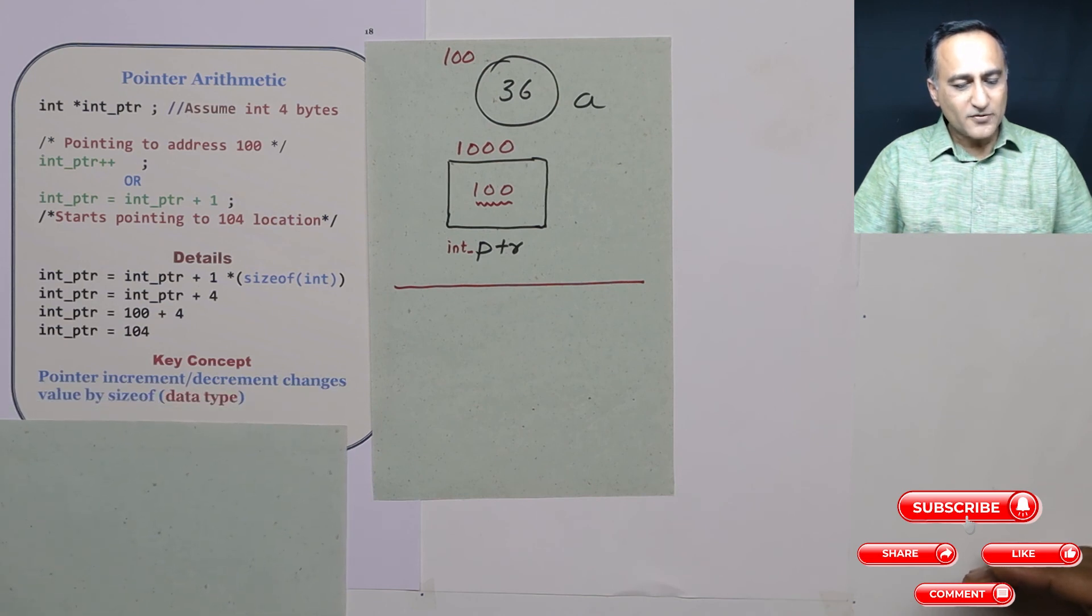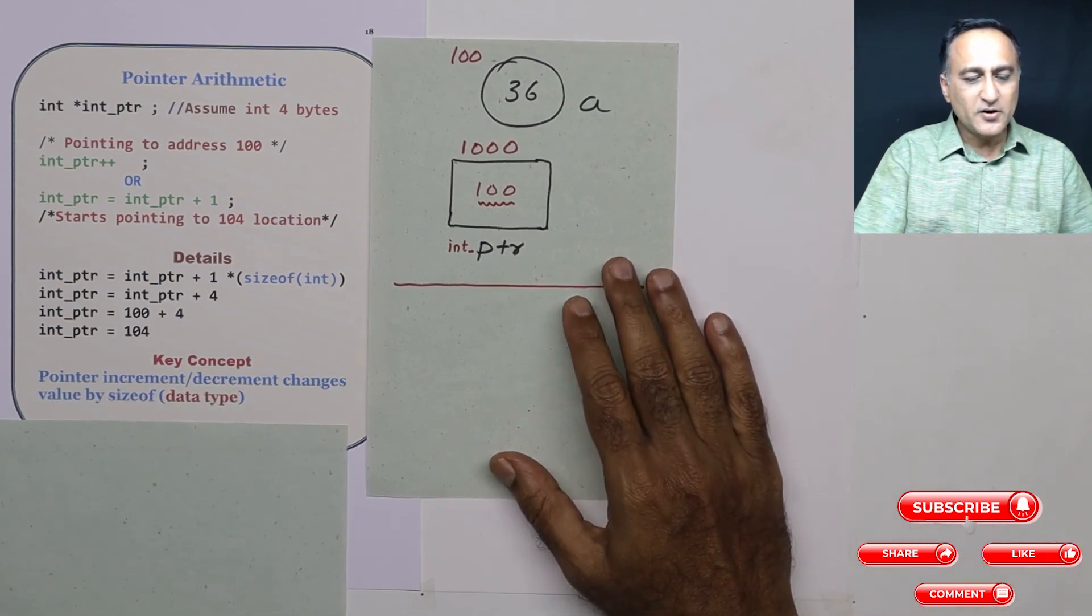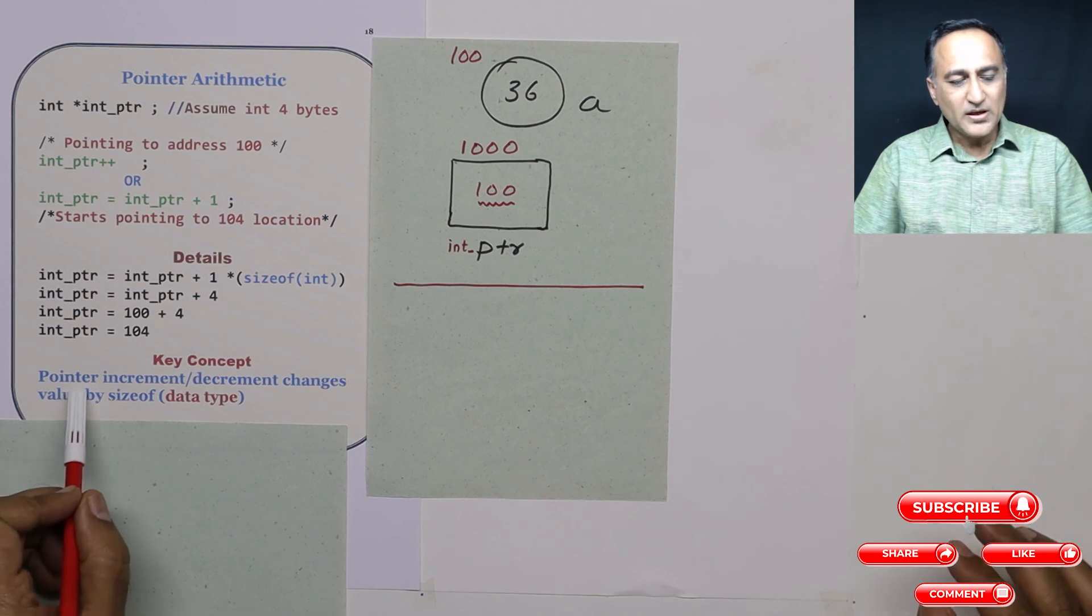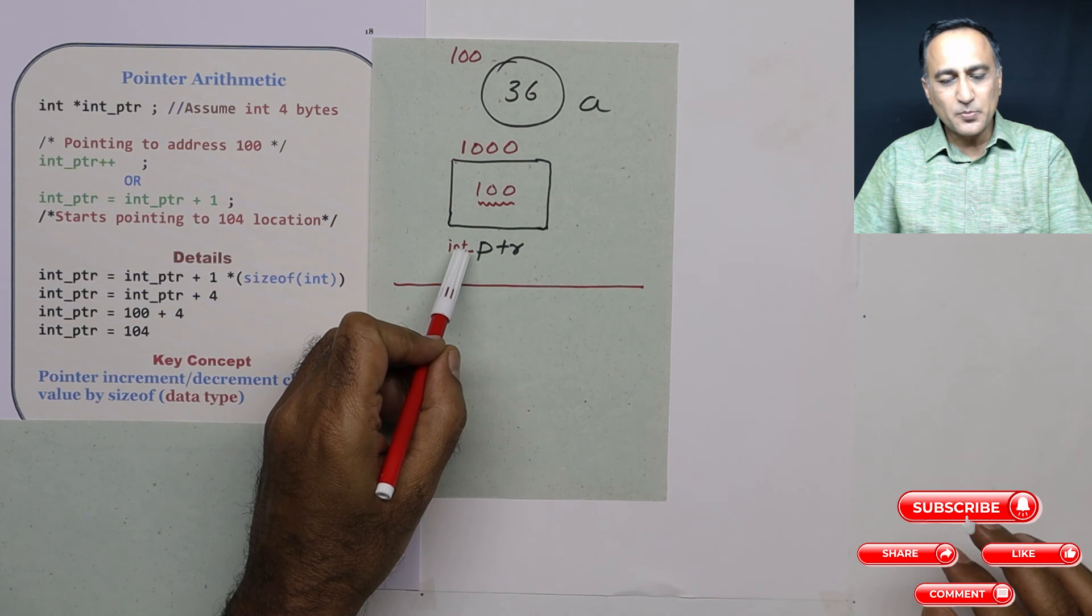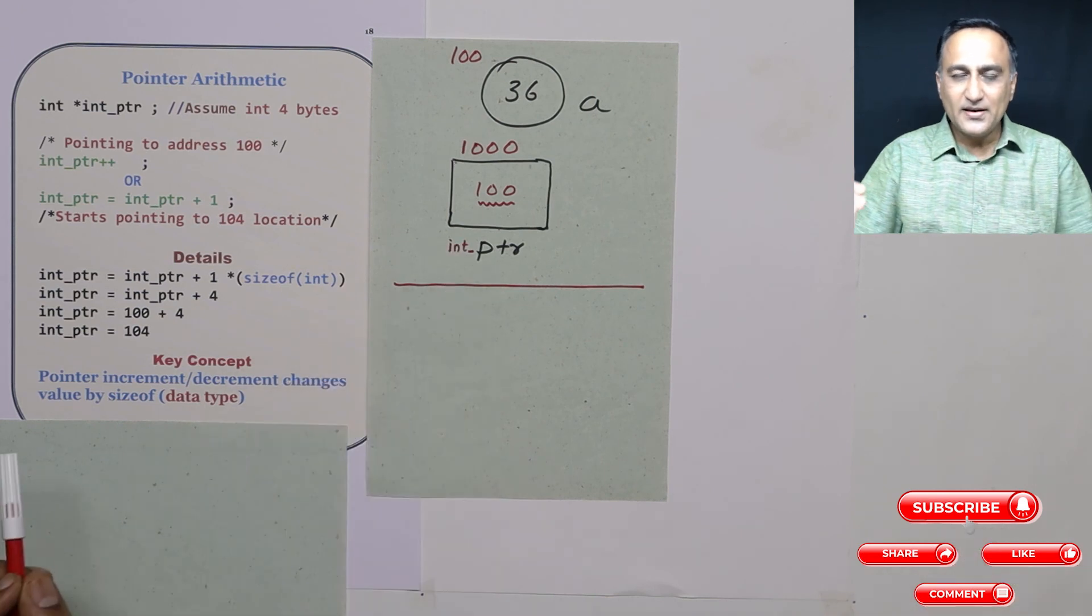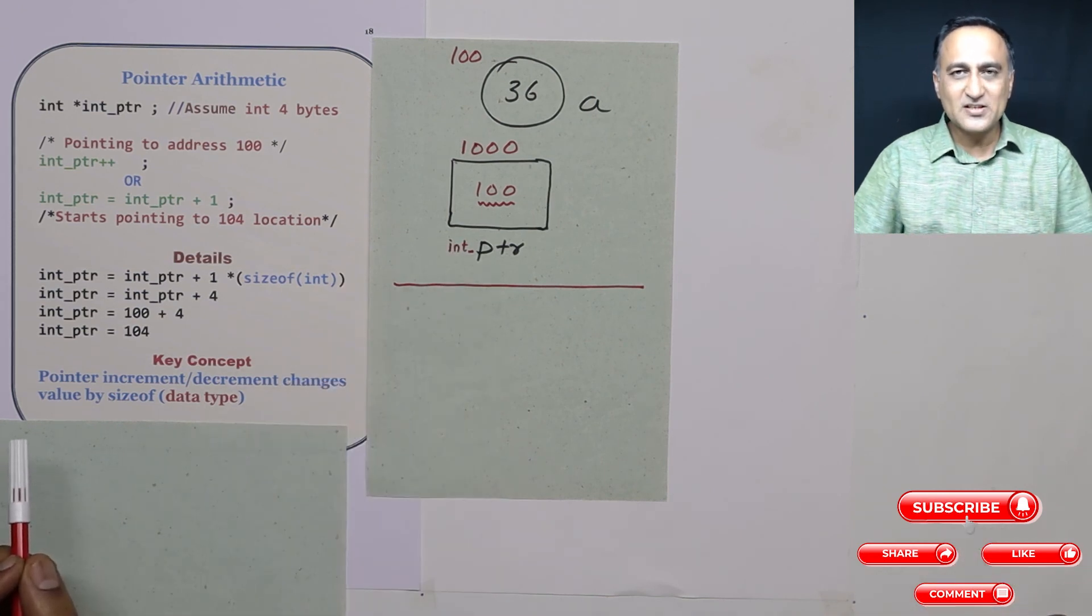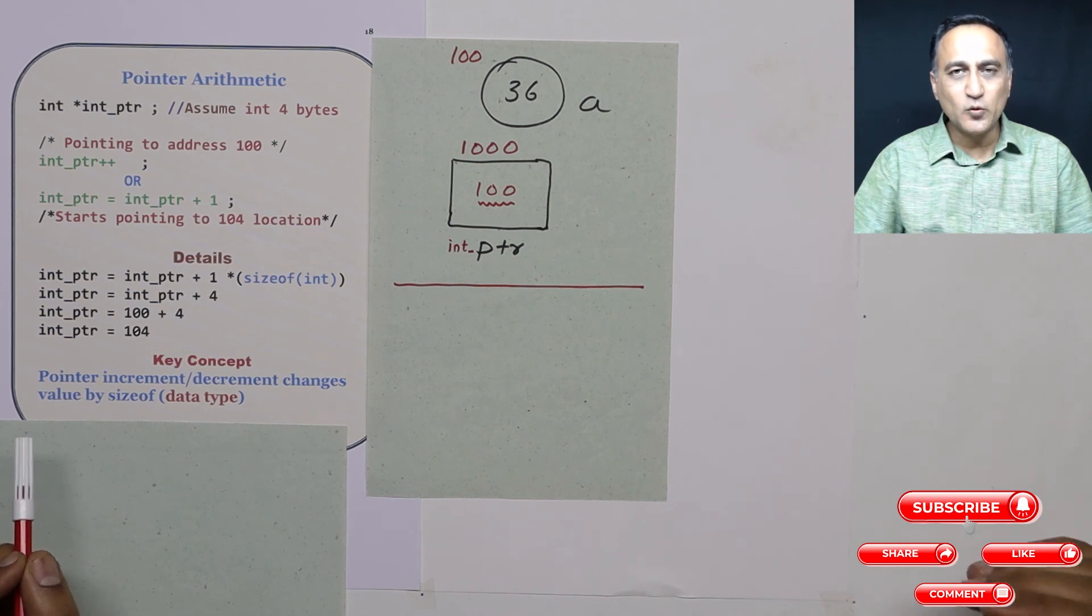So the moral of the story or the key concept you really need to remember here is when you increment or decrement the address, that means a pointer variable, it will increase or decrease by the size of the data type it is pointing to or referring to.